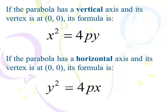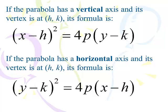These both have vertices at the origin. If we want to move the vertex to (h, k), then we have x minus h squared equals 4p times (y minus k) for vertical parabolas opening up or down, or y minus k squared equals 4p times (x minus h) for horizontal parabolas opening right or left.